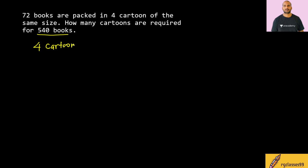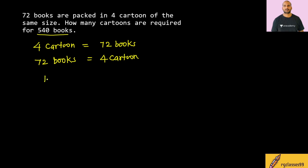So in these 4 cartons, how many books are available? 72 books are available. So if we look at it this way — for 72 books, how many cartons are available? 4 cartons. So for one book, the number of cartons is 4 upon 72.